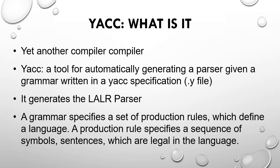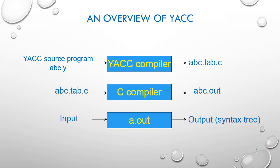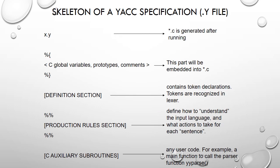With the help of a block diagram you can understand the basic functioning of the YACC compiler. A source program written with the extension .y is given to the YACC compiler, which generates a .c file. The same .c file, with the help of the C compiler, generates the output file. Some input is provided in the form of strings to this output file, and it produces a syntax tree for the given input string.